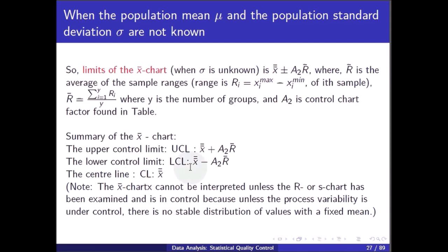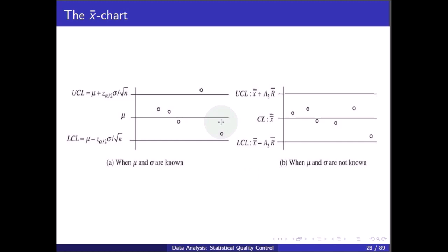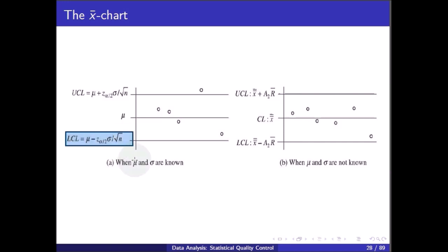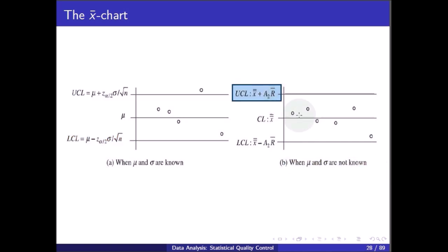Note that the X-bar chart cannot be interpreted unless the R or S chart has been examined and is in control, because unless process variability is under control there is no stable distribution with a fixed mean. Summary: when mu and sigma are known, UCL = mu + z_alpha/2 * (sigma / sqrt(n)), CL = mu, LCL = mu - z_alpha/2 * (sigma / sqrt(n)); when mu and sigma are not known, UCL = x-double-bar + A2 * R-bar, LCL = x-double-bar - A2 * R-bar.